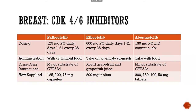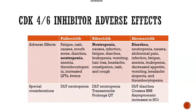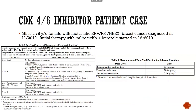Side effects: for palbociclib and ribociclib, the dose-limiting toxicity is neutropenia — it can be profound and significant, so the laboratory monitoring built into the recommendation needs to be followed. For abemaciclib, the dose-limiting toxicity is diarrhea; although it can still cause count issues, most commonly it causes diarrhea. A special consideration for abemaciclib is that it may be used up front in a patient with metastatic disease in the brain, because we know it crosses the blood-brain barrier.